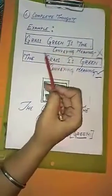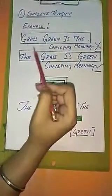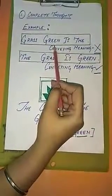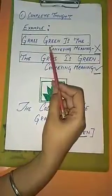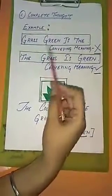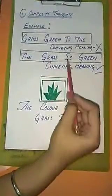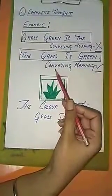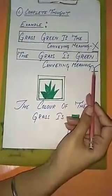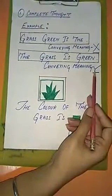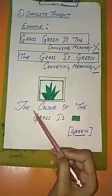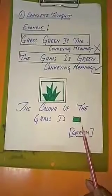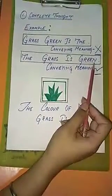But is it conveying any meaning? No. So it is not a sentence. Now rearrange the same words and we get a sentence: The grass is green. Here we see that it conveys meaning, so it is a sentence. We get to know that the color of grass is green, so this line we call a sentence.